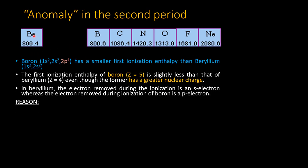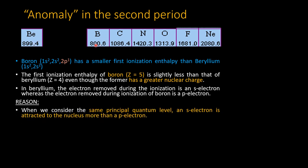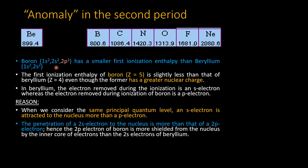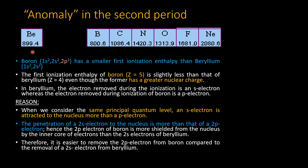The anomaly for beryllium versus boron: beryllium has a higher ionization potential than boron. In boron, the 2p electron is shielded by the 2s electrons. As a result, the 2p electron does not experience the nuclear charge of boron, even though boron's nuclear charge is 5. So the electron can be easily removed, and that is why boron has a lower ionization potential than beryllium.